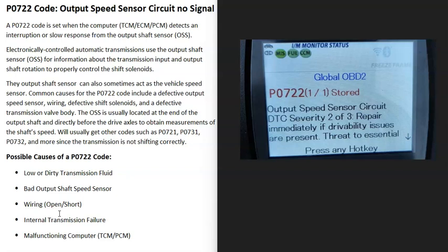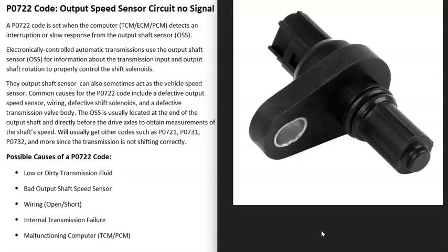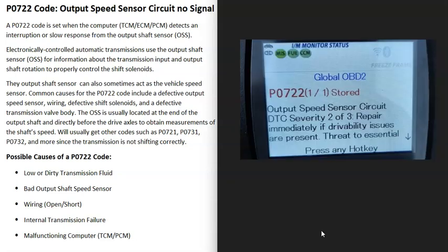Today I'm talking about a P0722 code — what it is and how you go about fixing it. A P0722 code is an output speed sensor circuit no signal. Modern transmissions have a lot of sensors built into them, and one of these is the output speed sensor, which reports back to the computer the speed that the output shaft is rotating. When you get a P0722 code, the computer is seeing some kind of issue with this sensor — it's not receiving a signal for some reason, and so it's going to need troubleshooting.